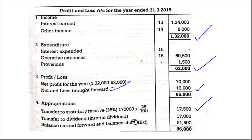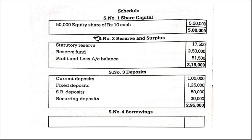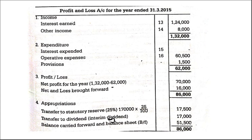Then interim dividend — 17,000 is there. Balance carried forward to balance sheet — this is the balancing figure. From total profit of 86,000, we have transferred 17,500 to statutory reserve, and this figure we have to write under Schedule 2. So it is better to prepare the profit and loss account first, then the balance sheet schedules. From 86,000 minus 17,500 minus 17,000 = 51,500. This 51,500 should be transferred to the balance sheet.